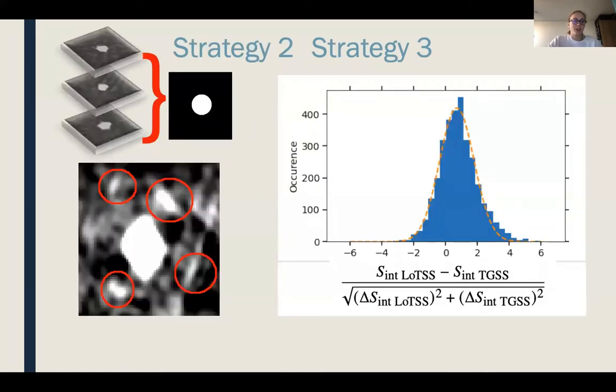A second strategy is to reduce the sidelobe artifacts that arise around bright sources, because these can be interpreted as false positive transient candidates. To reduce this effect, we stack all bright sources together, like shown on the left, and we expect to see something like this for a perfectly cleaned and calibrated survey.